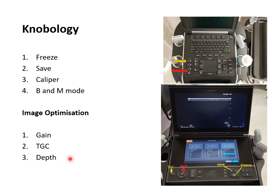Depth allows you to choose how far you want to send your sound waves. Try to use the least depth possible for the organ of interest. For example, if you are scanning a kidney located at 12 centimeters depth, try to use 12 to 14 centimeters — do not go to 20 centimeters, because the sound wave energy will be wasted. The depth scale appears on the side of the image.